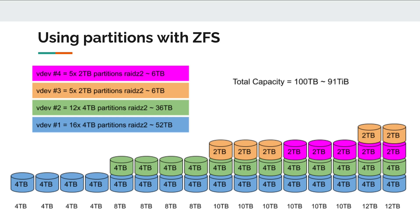Next we carve out another set of 4-terabyte partitions using the remaining drives, giving us a 12×4-terabyte RAID Z2 VDEV identified by light green. The remaining space is carved into 2-terabyte partitions, but these require more thought because there are four of them sharing the same physical drive and we don't want those in the same VDEV. To balance them out — ensuring none are on the same physical drive and using RAID Z2 — we make them into two separate VDEVs of 5×2-terabyte partitions each, shown in orange and magenta. This gives us four VDEVs all with RAID Z2 redundancy and a total capacity of 100 terabytes, or about 91 tebibytes.